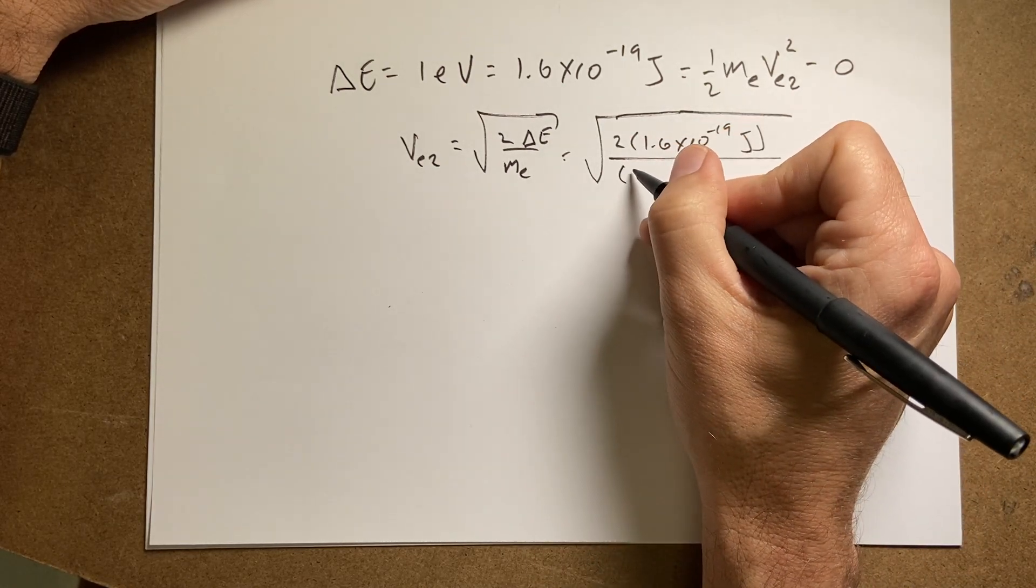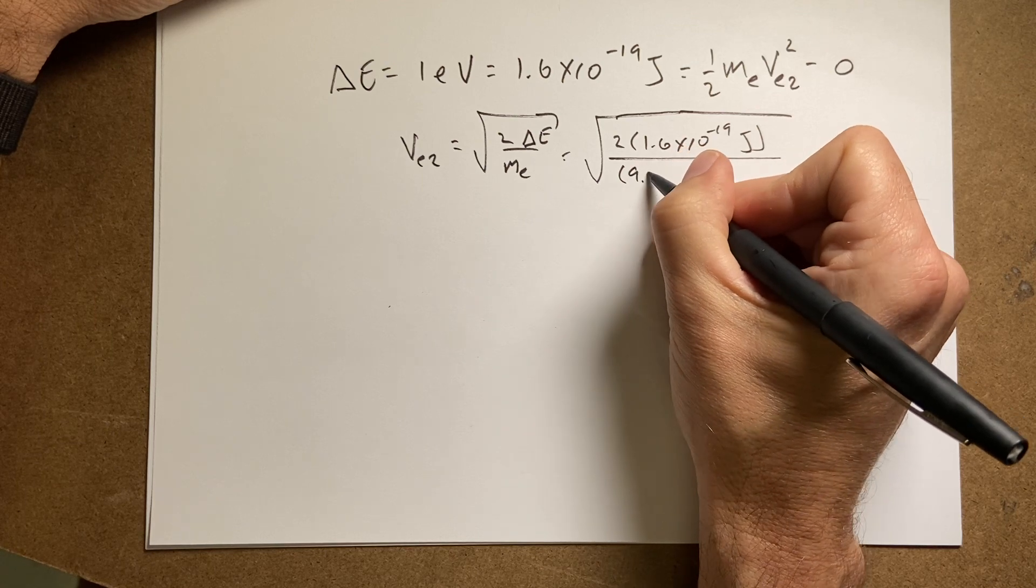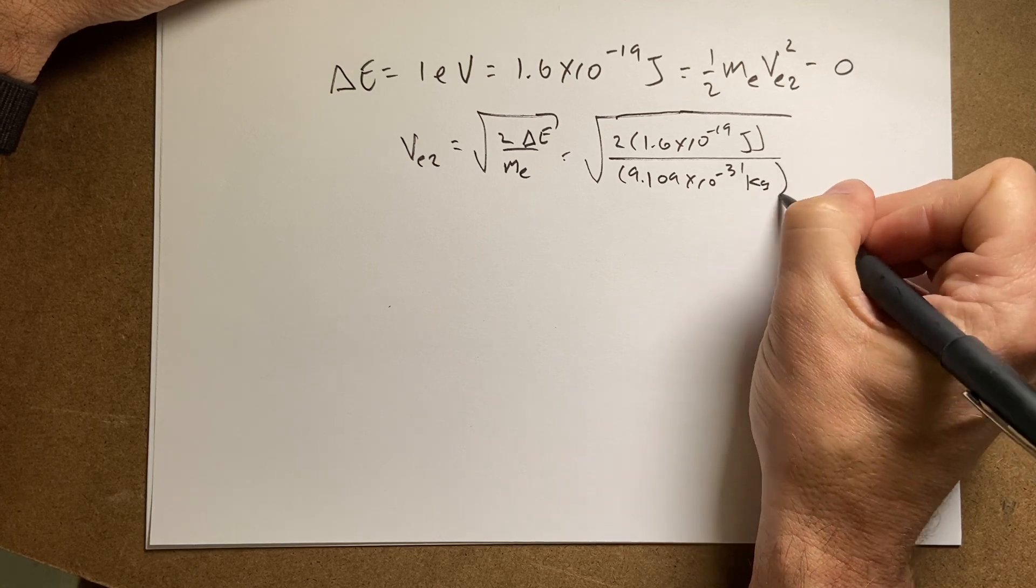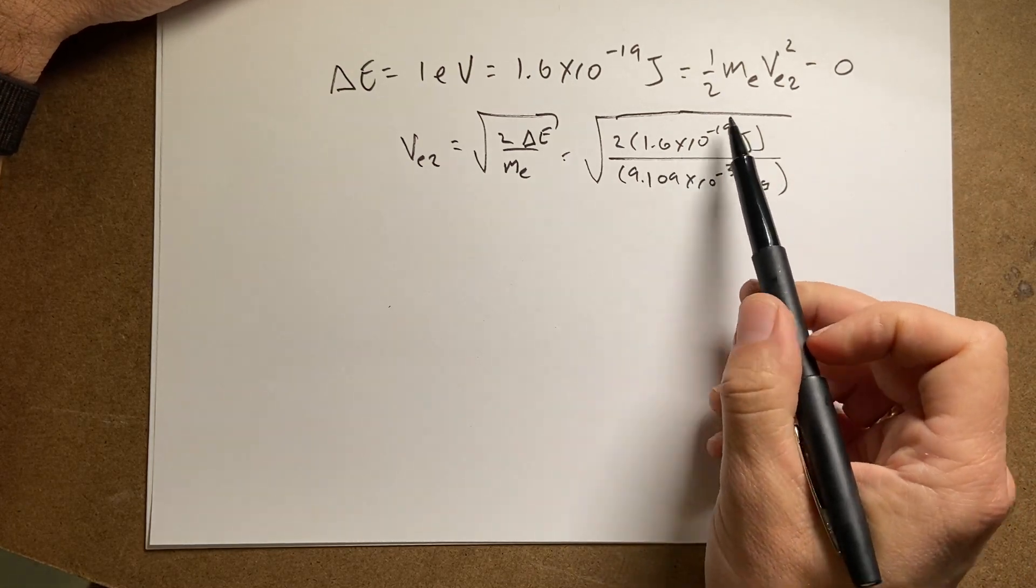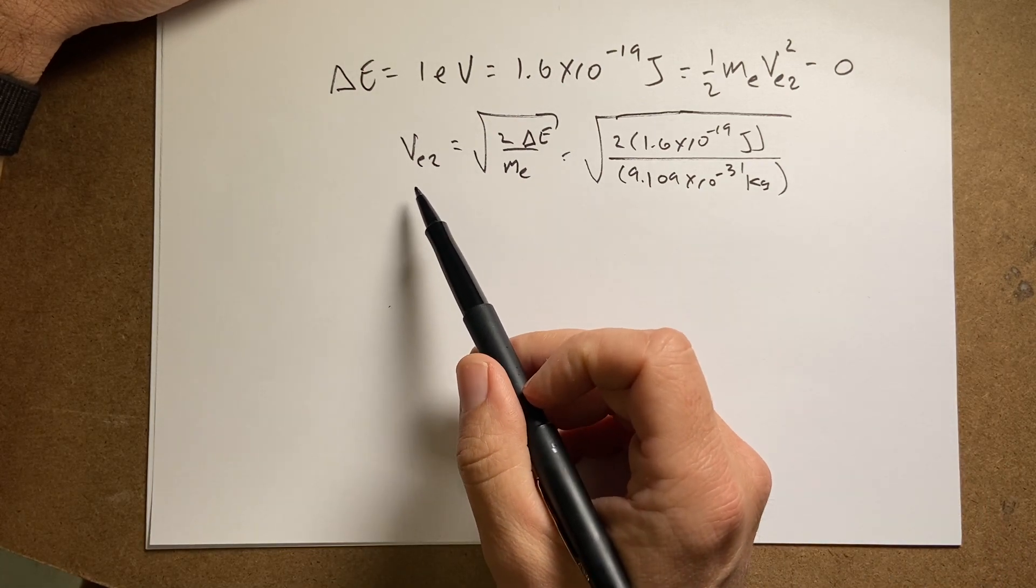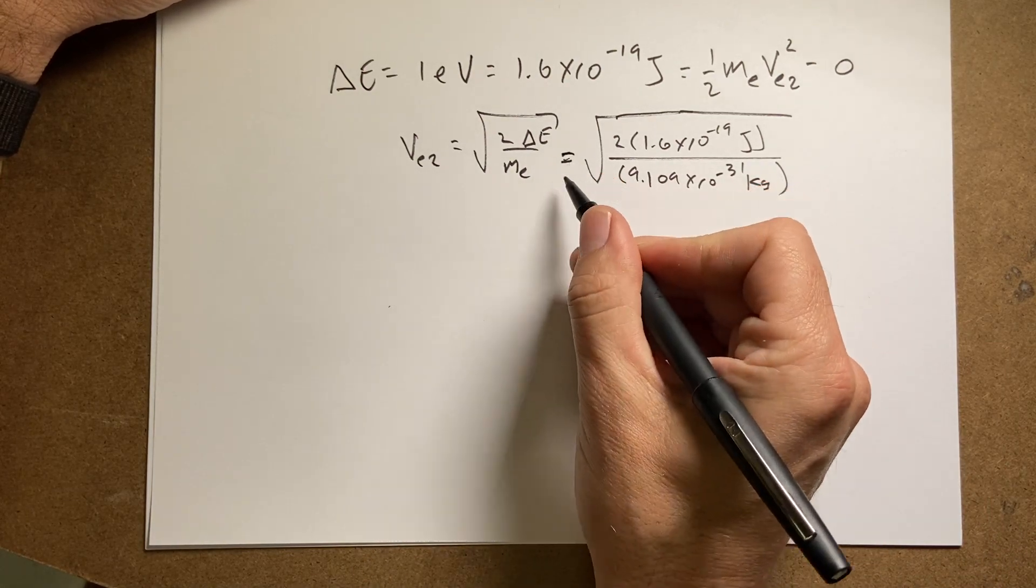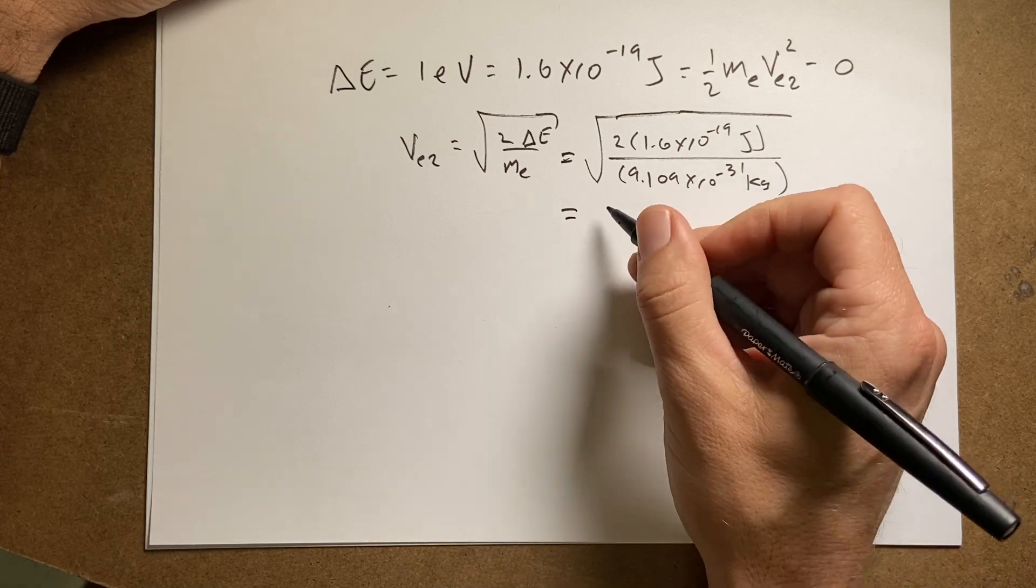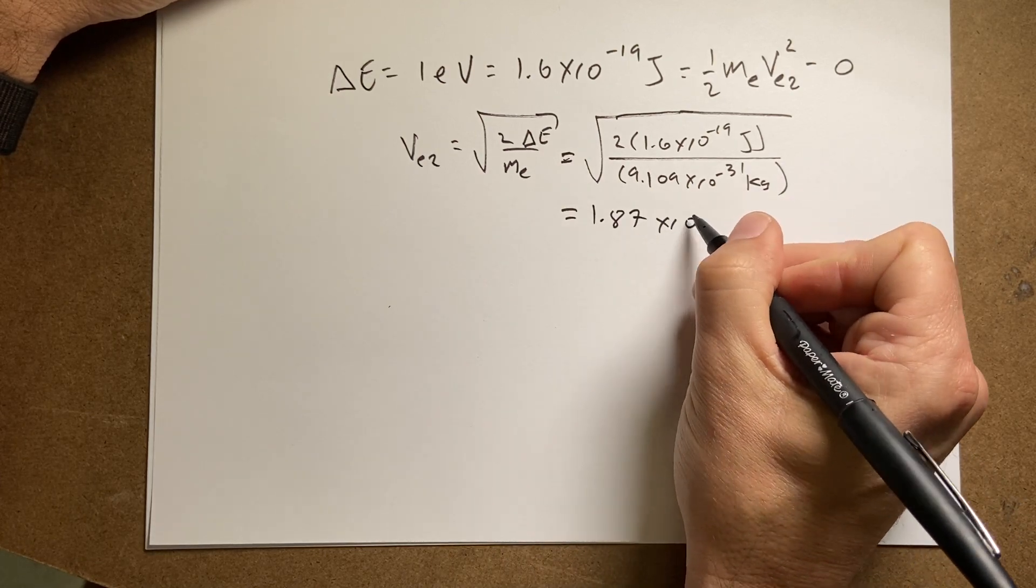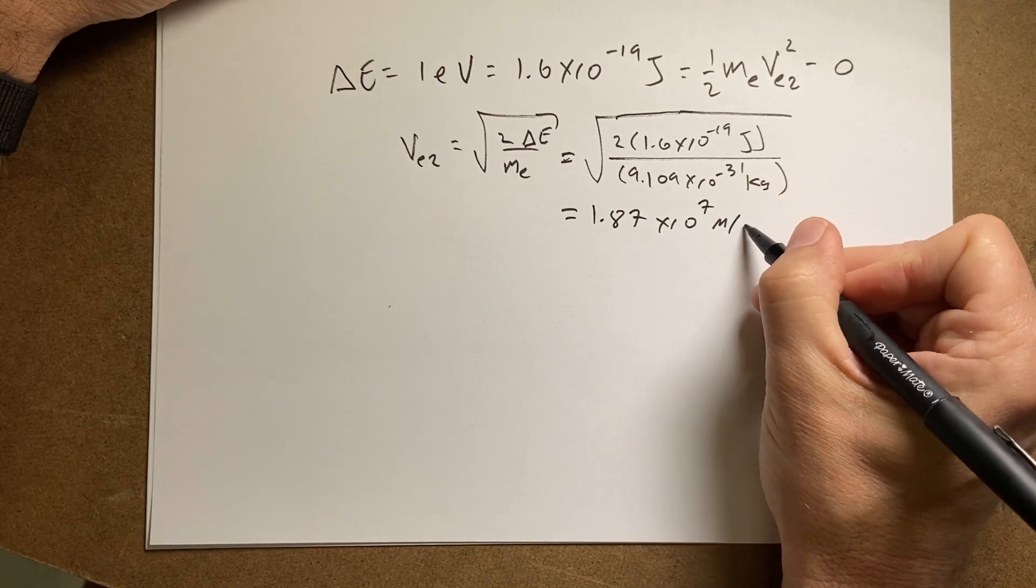Two times 1.6 times 10 to the negative 19th joules over the mass of the electron, which is going to be, I wrote it up there, 9.109 times 10 to the negative 31 kilograms. So you definitely want to have, if you have the energy in joules and the mass in kilograms, I'll get the velocity in meters per second. So if I put this in my calculator, which I did,